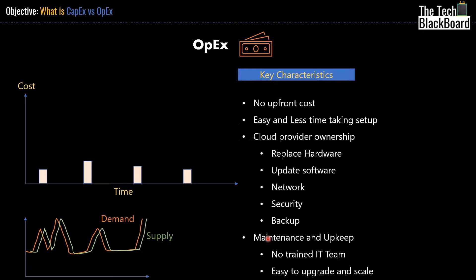Now let's look at some other characteristics of OpEx. Opposite to CapEx, in OpEx you don't have to spend a fortune upfront. Once your basic infrastructure is ready and your application is up and running, your expense depends on the number of resources you use, the type of resources, and the time you use them. It's easy and quick to set up — just a few clicks and all resources are provisioned in a matter of minutes.